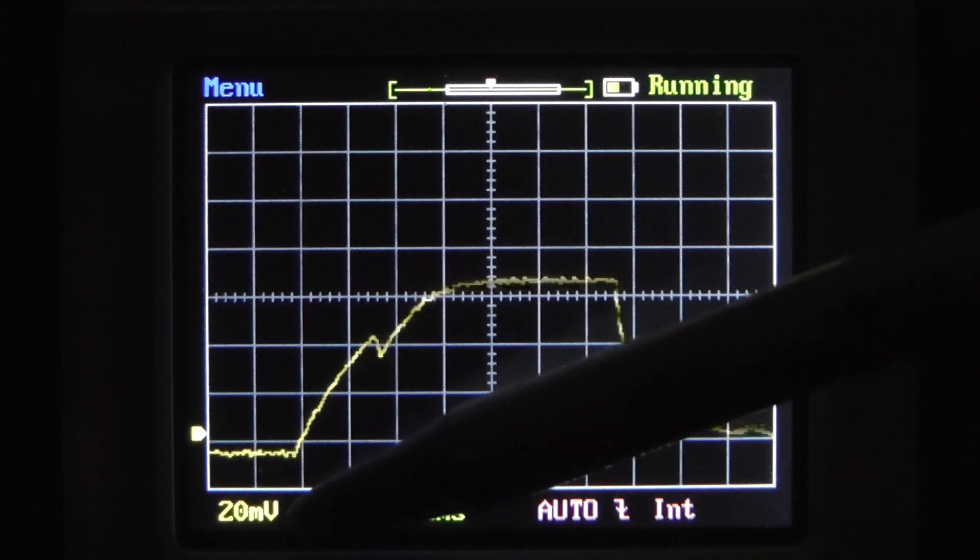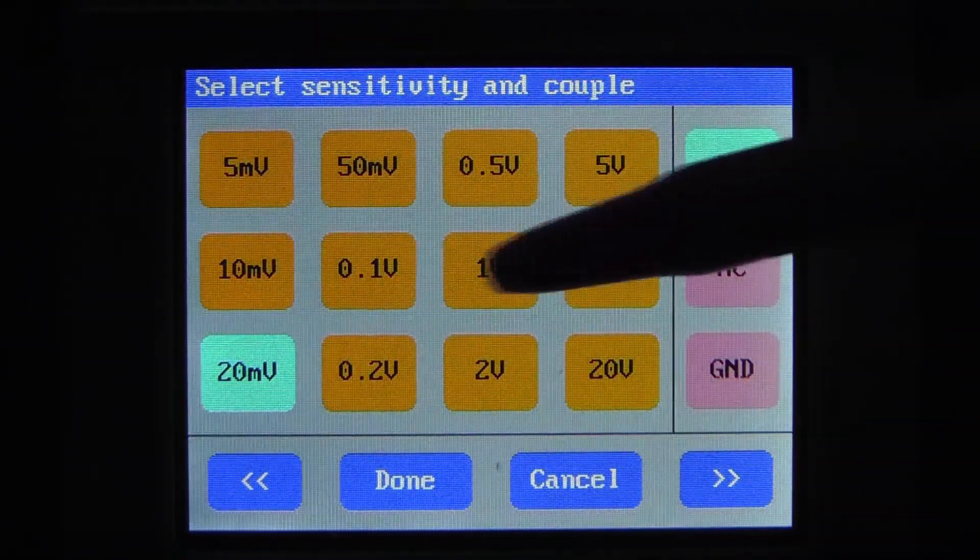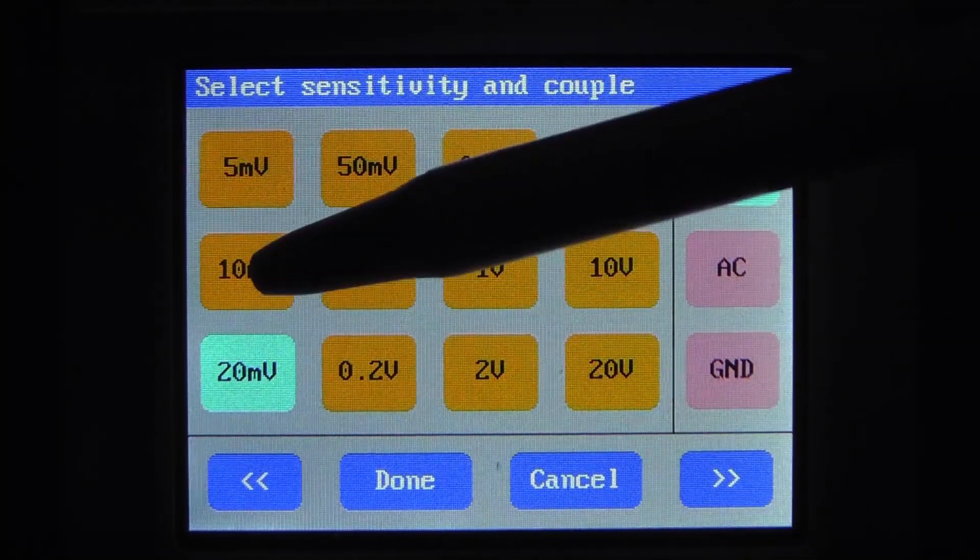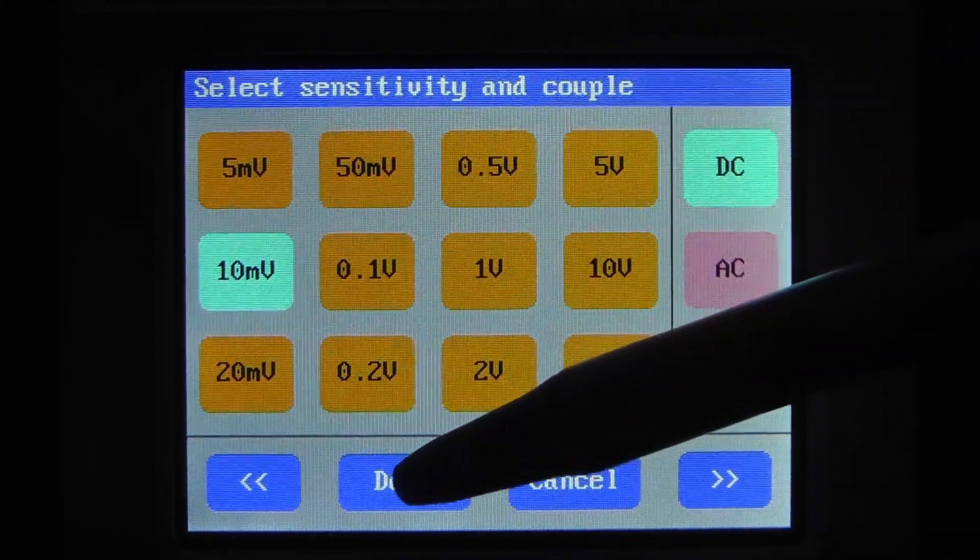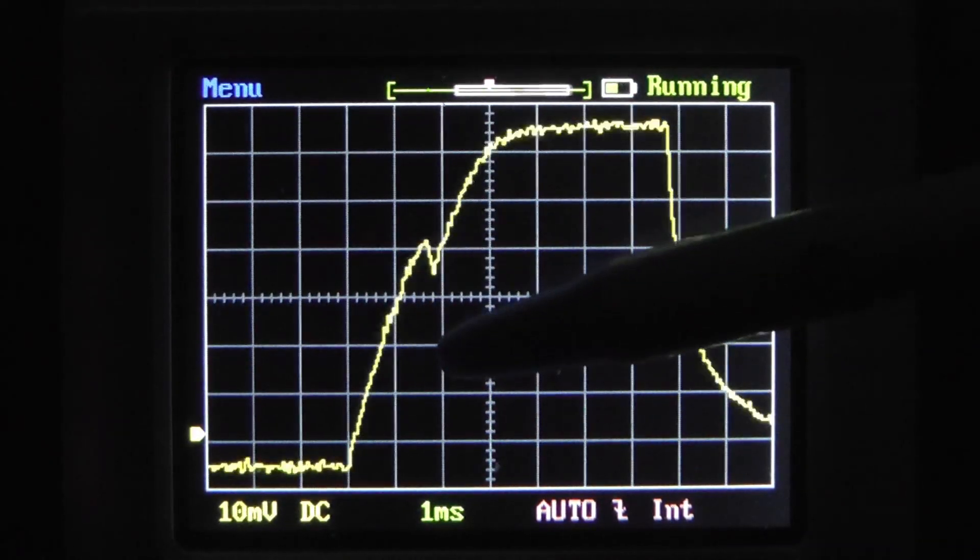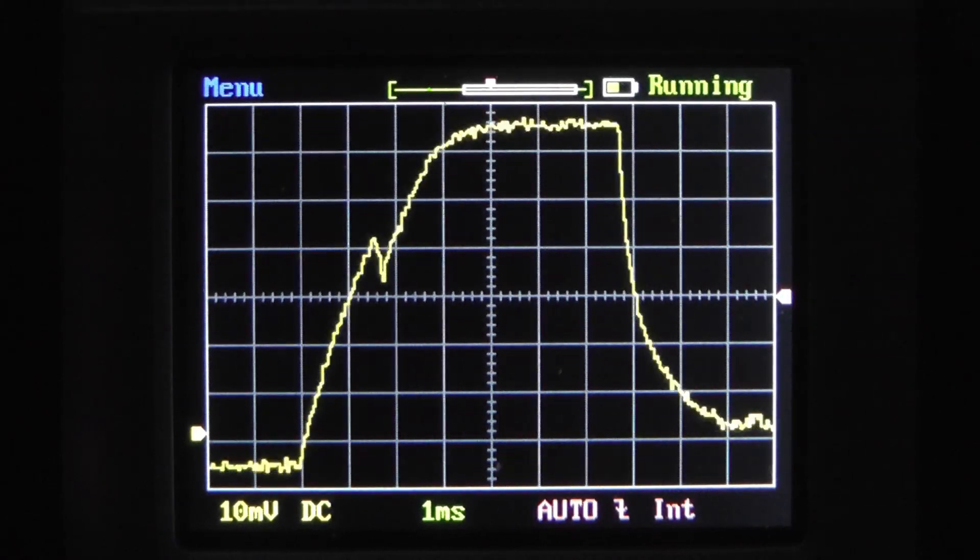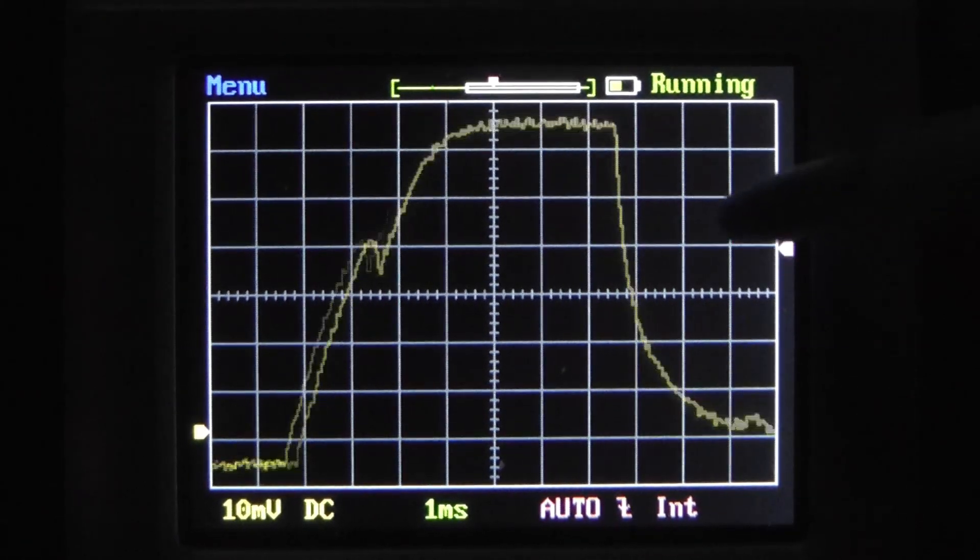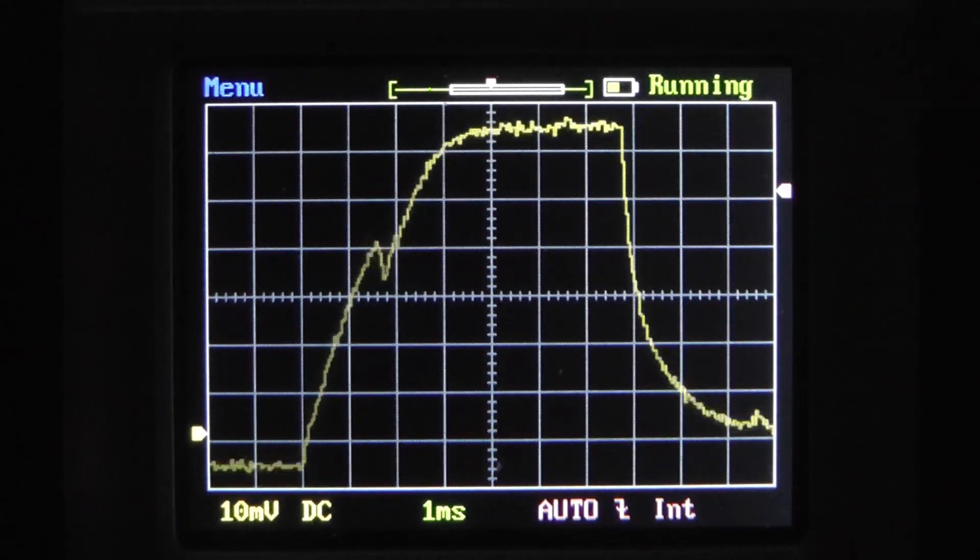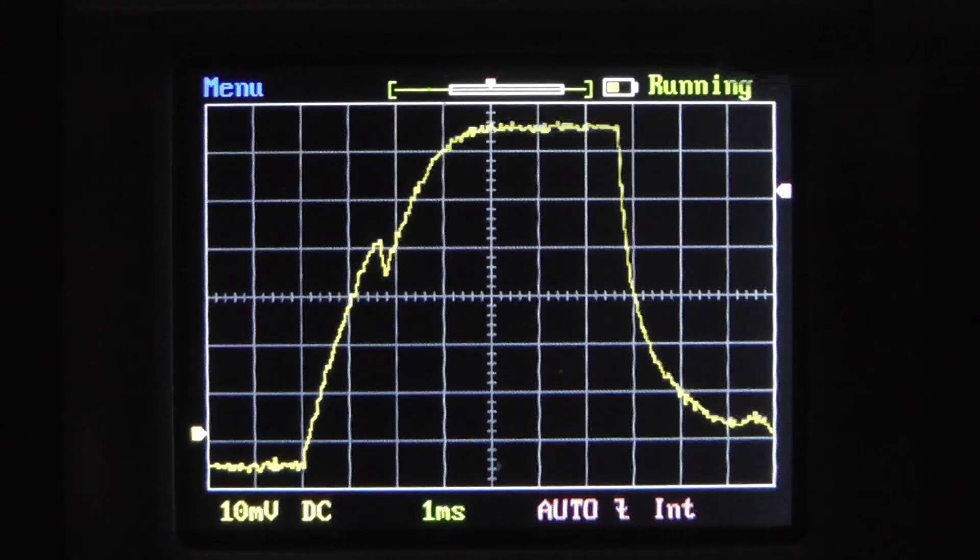If I wanted to adjust my time base, I just come over here, and I'll go to, say, 10 millivolts per division. Let's see how that looks. And if I adjust my trigger, it should stabilize it a little bit better. And I will go ahead and hold that.